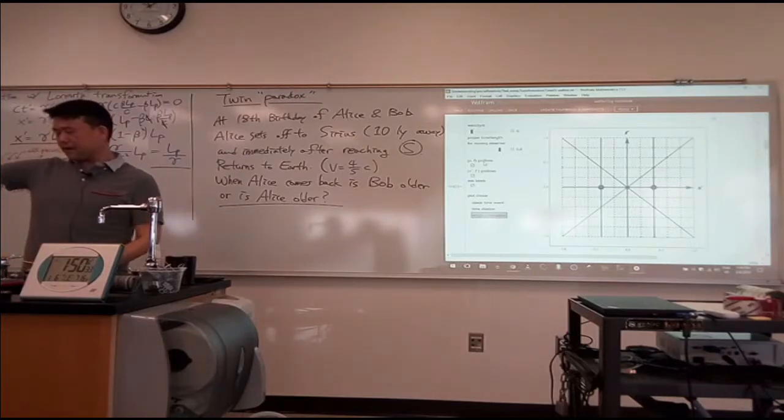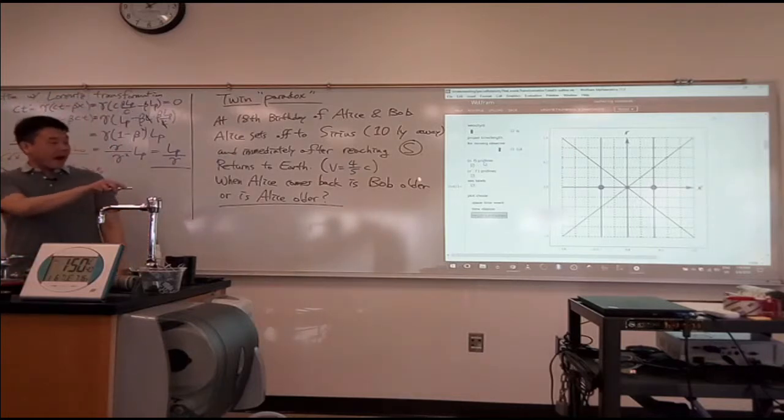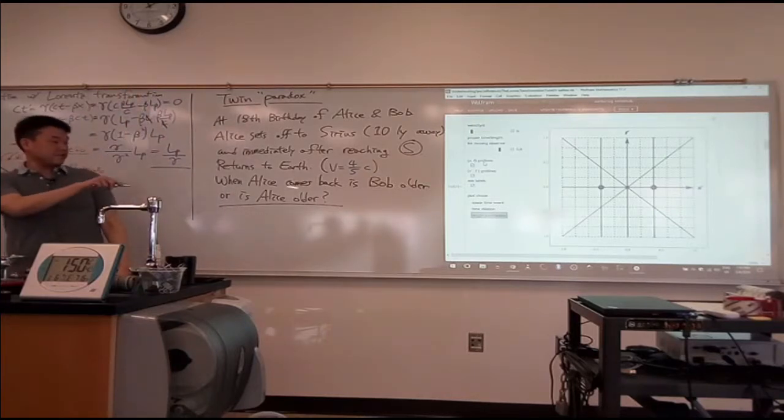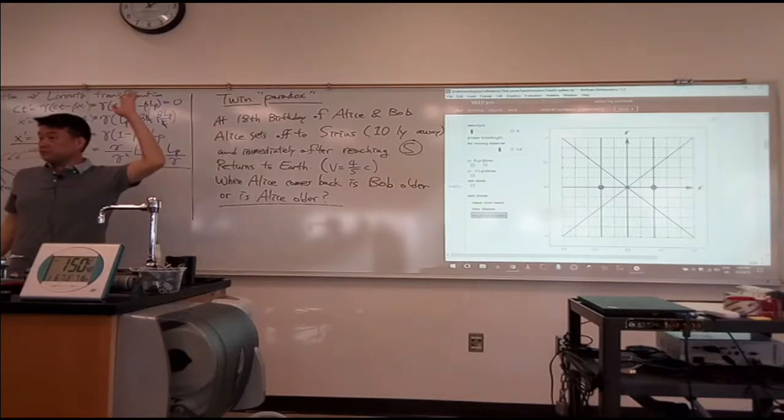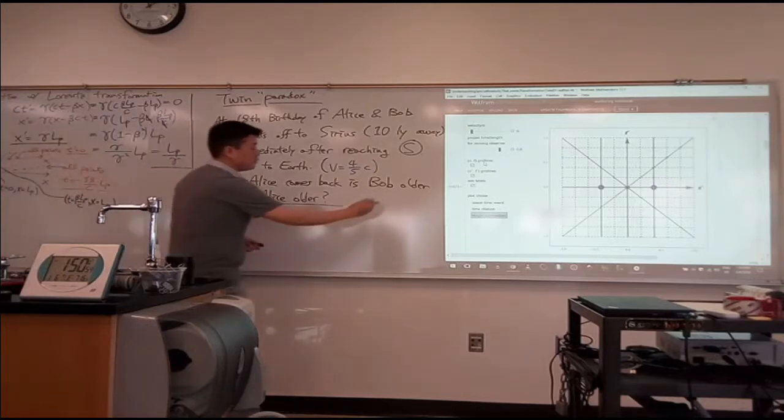So, I find the majority of people get the answer intuitively correct. So, well, let's see. How many people say Bob is the twin that's going to be older? Okay. How many think Alice should be the twin that's going to be older? Okay. So, the correct answer is yes. Bob is actually older.